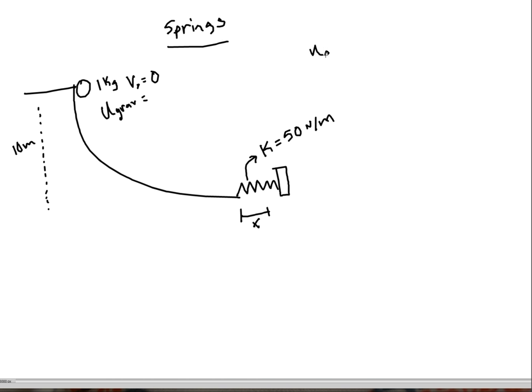We know the equation for elastic potential energy is one half k x squared. The equation for gravitational potential energy is mgy. So I can set these two equal to each other.